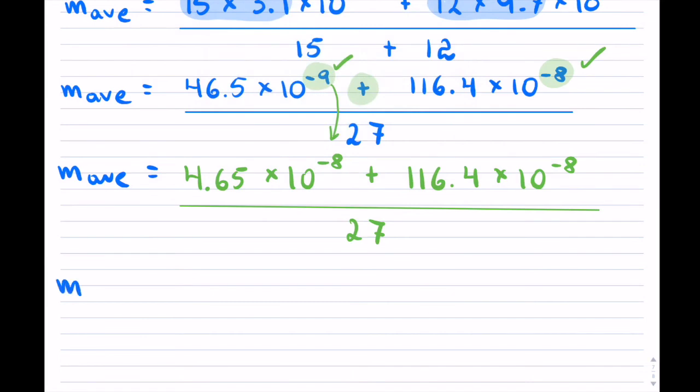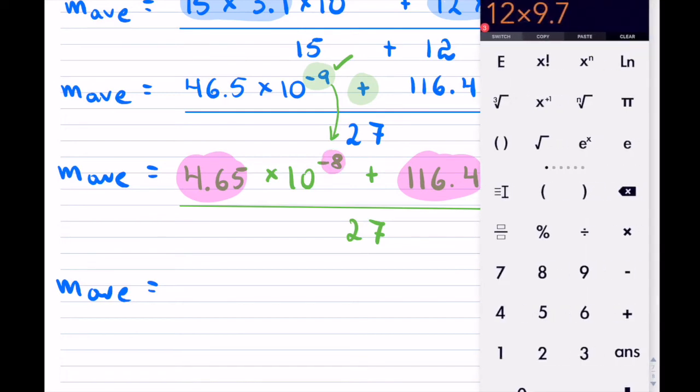So now I'm going to be adding this plus this. The exponent stays the same, so I have 46.5 plus 116.4, which is 121.05 times 10 to the negative 8, and we're dividing by 27.